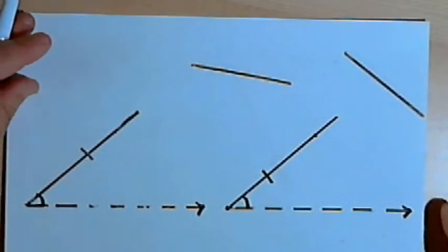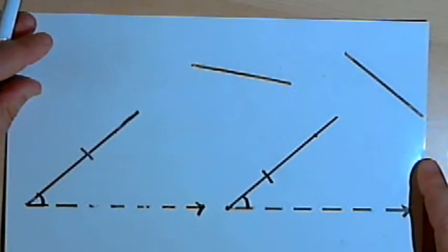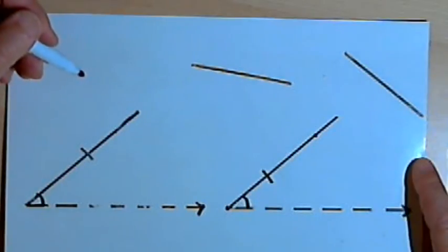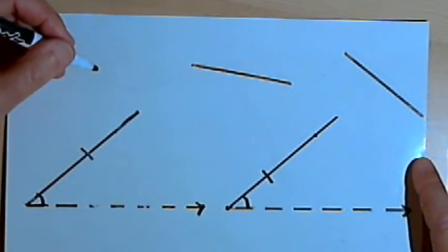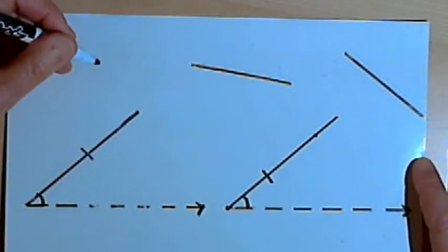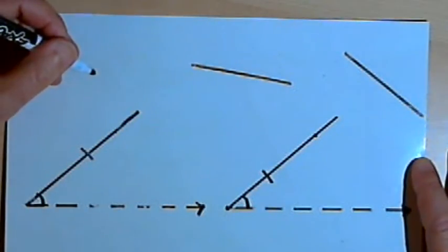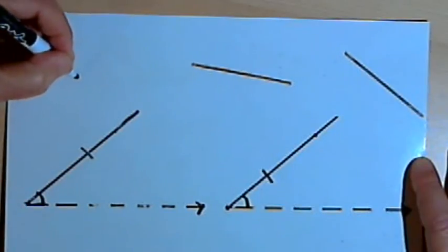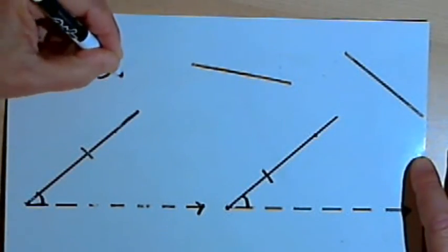When you've got two triangles and you want to show that they're congruent, there are a number of different ways you can do this. You might use side-side-side congruence, or side-angle-side, or angle-side-angle, or angle-angle-side. What about side-side-angle? Let's see if that's a possibility.